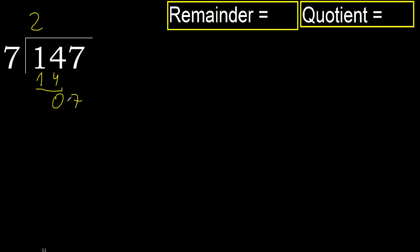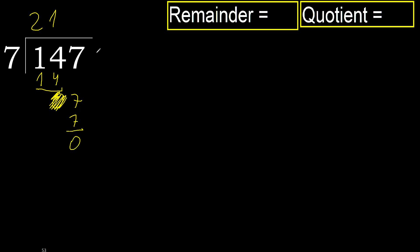Eliminate the 0 on this side. 7: 7 multiplied by 1 is 7. 7 is not greater. 7 minus 7 equals 0. Next. There is no number, therefore finish it.